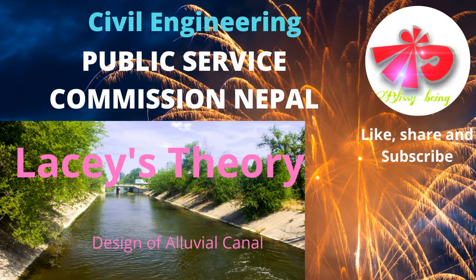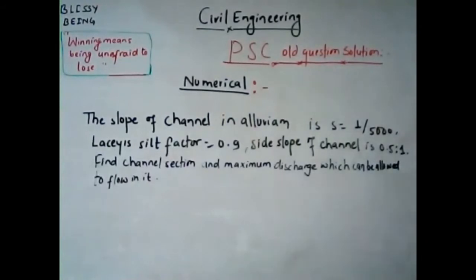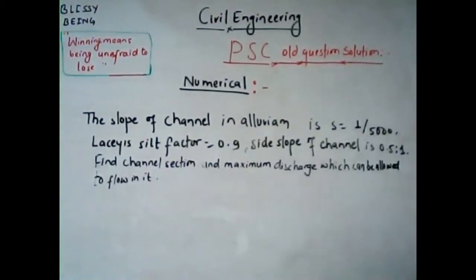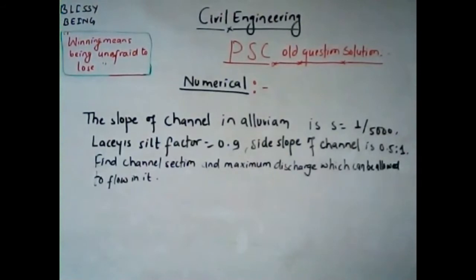This is a five-mark problem asked in the previous year of the Public Service Commission technical subject paper. The question is: a channel in alluvial soil has a bed slope S = 1/5000. The Lacey's silt factor is F = 0.9, and the channel side slope is 0.5 horizontal to 1 vertical.